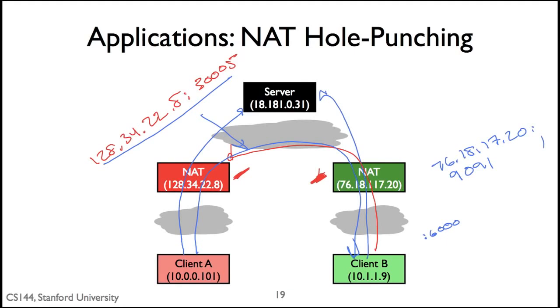So one question is, is there a kind of NAT or what kinds of NATs would this work for? This model where Client A and Client B simultaneously send traffic to the external IP address and port that map to an internal IP address and port on each of these clients, which were determined earlier by communicating with the server. So given these different kinds of NATs, is there a kind of NAT for which this would not work?